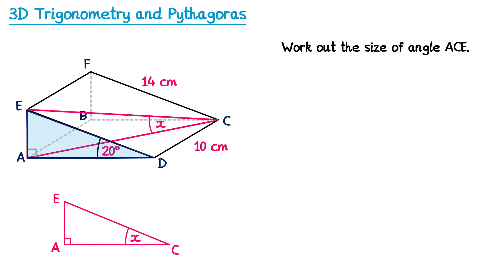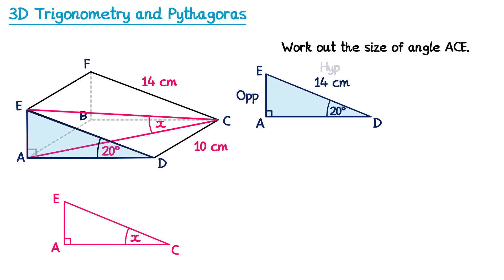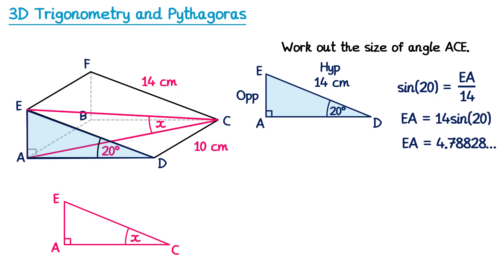Looking at triangle ACE, I don't have any of the information for this triangle yet, so I need to work out at least two sides first. I'll start with the triangle on the front of the prism, triangle ADE, to find the length AE. The angle is 20 degrees and ED is 14 cm (same as FC). Labelling AE as opposite and ED as hypotenuse, we use sine. Sin 20 = AE ÷ 14, so AE = 14 sin 20, which gives 4.78 and so on centimetres.